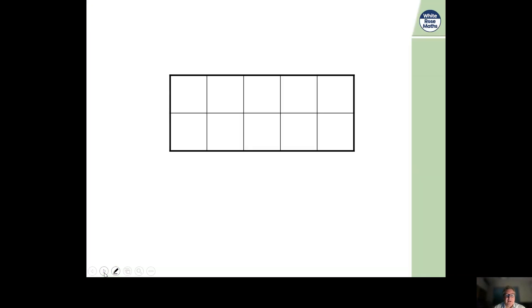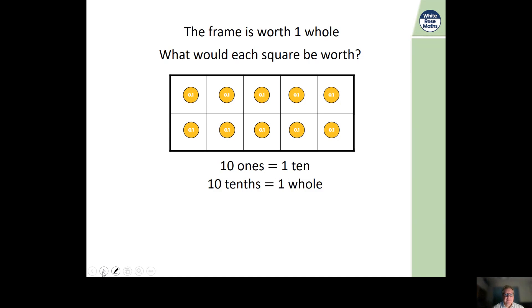Okay, let's do some exploring of decimals today. It's important here that the frame is worth one whole. And the one whole is segmented into equal parts: one, two, three, four, five. Two times five is ten. So each part would be worth one tenth or 0.1. So we know that ten tenths, ten of these, equals one whole.